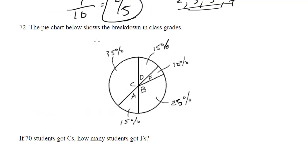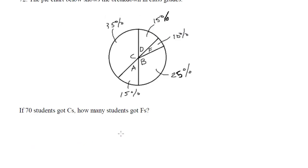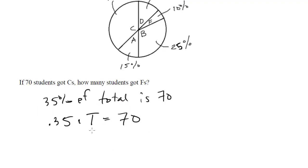The pie chart below shows the breakdown in class grades. If 70 students got Cs, how many students got Fs? Well, we know that 35% of the class got a C. So if 35% of the total is 70, we can use this word in a word set to come up with the equation: 0.35 times the total equals 70. So we do a little rearranging, we get T equals 70 divided by 0.35, which is 200. So the total number of students is 200. We want to know how many got Fs. We look at the pie chart and 10% got Fs. So what is 10% of 200? It's just 200 times 0.1, and that gives us 20. So the answer to this one is 20.